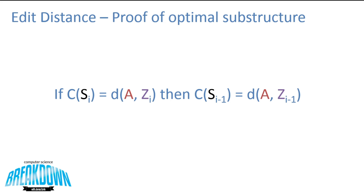The theorem we're trying to show: if the cost of s at i equals the distance from a to z_i, then the cost of s at i minus 1 equals the distance from a to z at i minus 1. This means that if performing i operations optimally transforms a to z_i, then performing i minus 1 operations is also optimal. This is the definition of optimal substructure, because any given string is comprised of its substring's optimal distance, and so on down to a single character.